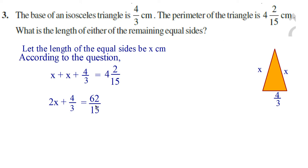The equation is 2x plus 4/3 is equal to 62/15. The denominators are 3 and 15; LCM is equal to 15. Multiply throughout by 15 to find the values of x. By solving this equation, you will get x is equal to 7/5, that is 1 and 2/5 centimeters. Therefore, each equal side of the isosceles triangle is 1 and 2/5 centimeters.